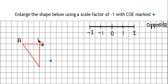There's A, there's B, and there's C. Now A is 1, 2, 3, 4, 5 squares left. And 1, 2, 3, 4, 5 squares left and 3 squares up.